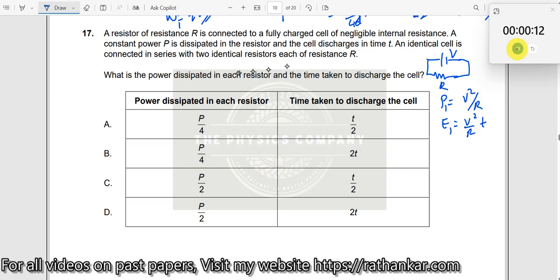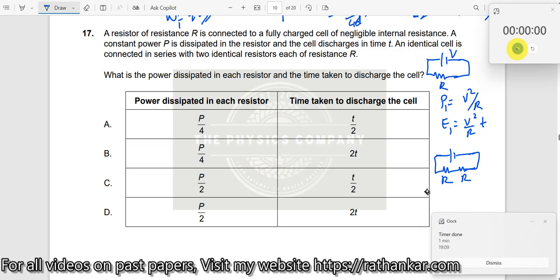Then, an identical cell is connected in series with two identical resistors, each with resistance R. Which means what? I have one more cell like this and two resistors are connected. So what is the power dissipated over here, R and R here, and as a result of it, what is the power dissipated in each resistance?